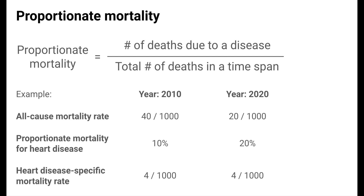We can actually compute the cause-specific mortality rate for heart disease using the all-cause mortality rate and the proportionate mortality. The proportionate mortality of 10% in 2010 tells us that 10% of the 40 deaths per 1,000 population was due to heart disease — so four deaths per 1,000 population are due to heart disease. We can do similarly for 2020 to see that the cause-specific mortality rate for heart disease is the same: 4 out of 1,000.